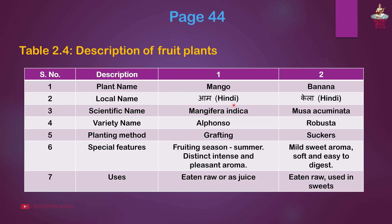Page 44, Table 2.4: Description of fruit plants. First: Mango. Local name: Aam in Hindi. Scientific name: Mangifera indica. Variety: Alphonso. Planting method: Grafting. Special features: Fruiting season is summer; distinct, intense and pleasant aroma. Uses: Eaten raw or used as juice.